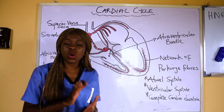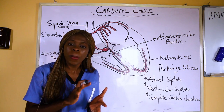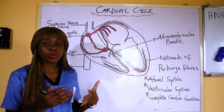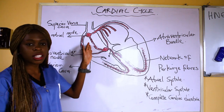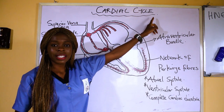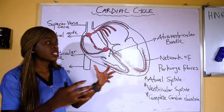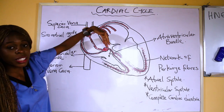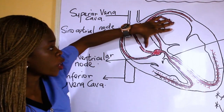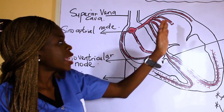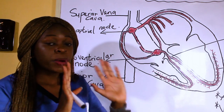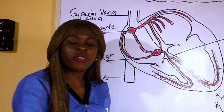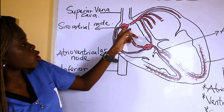If you understand the electrical activity of the heart and the blood flow through the heart, you'll understand the cardiac cycle properly. Deoxygenated blood comes from the inferior and superior vena cava into the right atrium, while pulmonary veins bring oxygenated blood into the left atrium. Both sides act simultaneously. During atrial filling, both atria fill — one with deoxygenated blood and one with oxygenated blood — and as pressure increases, blood passively flows down into the ventricles.